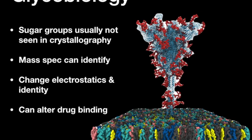But what does it mean to have glycan groups? What you see in this figure is the protein in blue and the glycan groups in red, which are embedded in this multicolored membrane. You can see that even before you reach the blue protein part, you have the red glycan groups that act as shields. This can change the electrostatics and even the identity of the protein to which the glycan groups are bound.